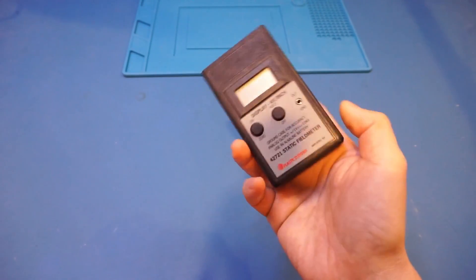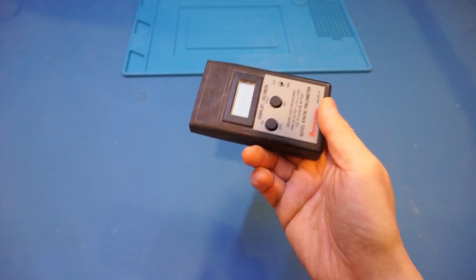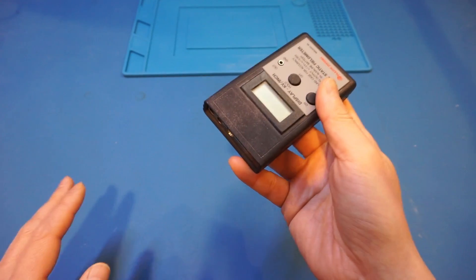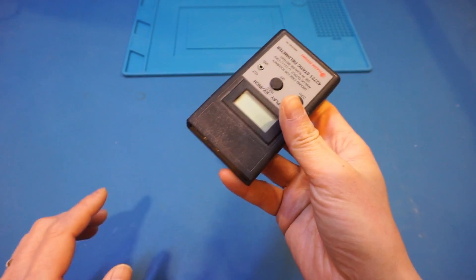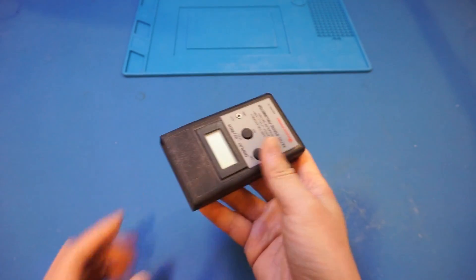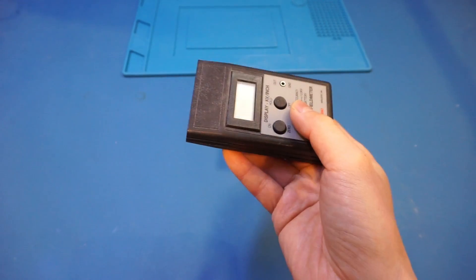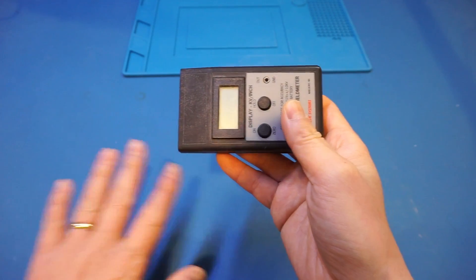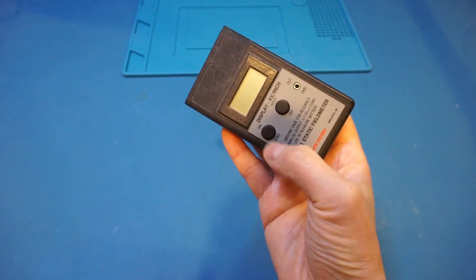We can verify the effectiveness of my ESD mat with this static field meter. Now, I'm actually just going to use an ESD mat to calibrate the meter. Technically speaking, I should use a known ground potential surface to do that, but in this case, we're mainly interested in the relative readings, so it doesn't really matter, although I know the ESD mat is grounded at ground potential. So let me actually turn it on here.